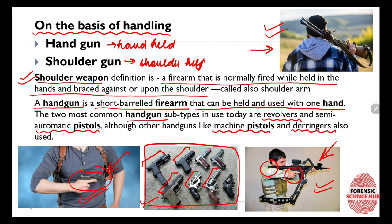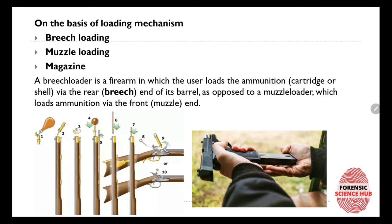Other handguns also exist, such as machine pistols and derringers, which are also a kind of pistol. On the basis of loading mechanism, we can divide firearms into breech loading, muzzle loading, and magazine loading.